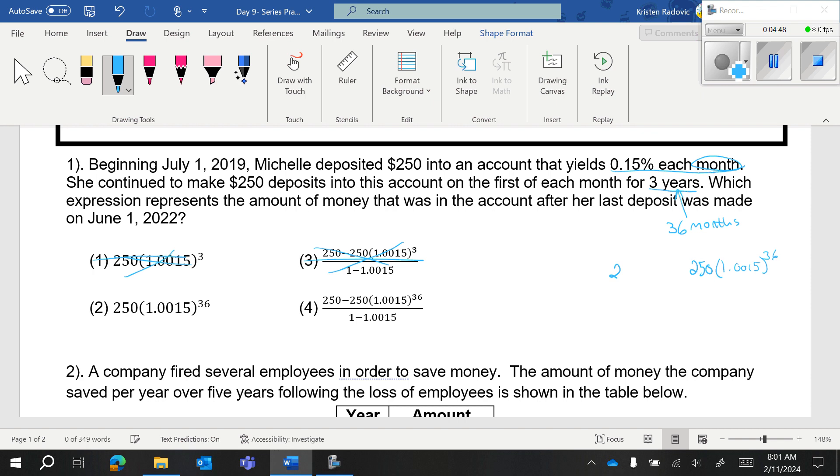And then she puts another $250 into an account the next month. But because that's one month later, that $250 only has 35 months to accrue interest.